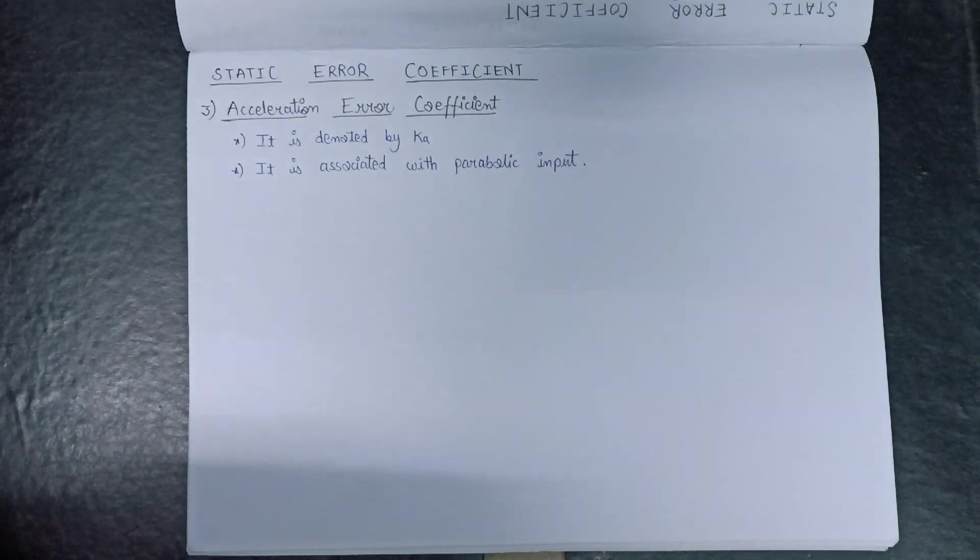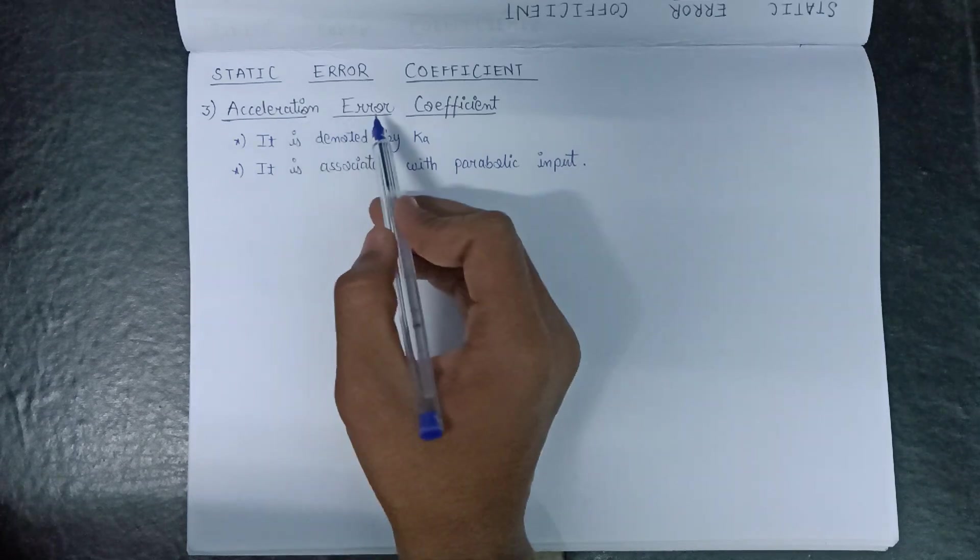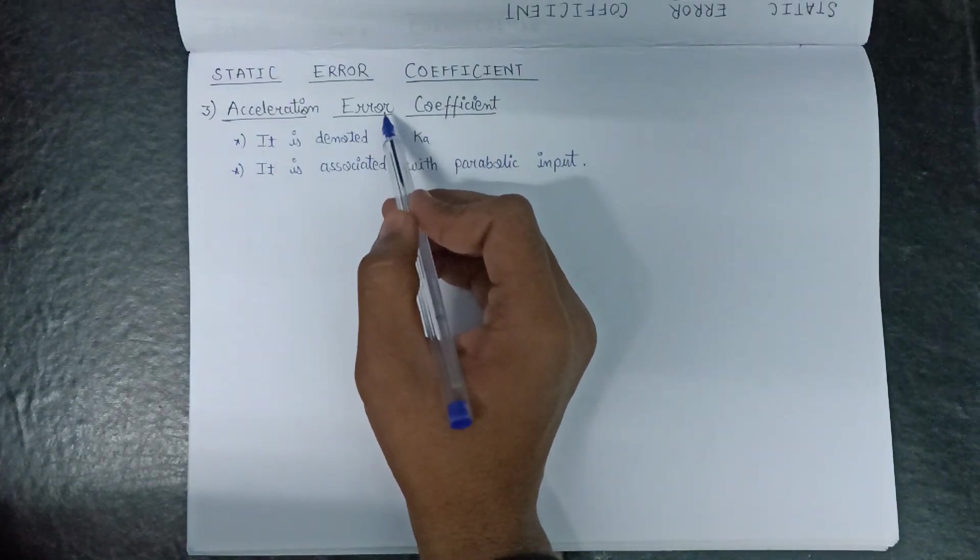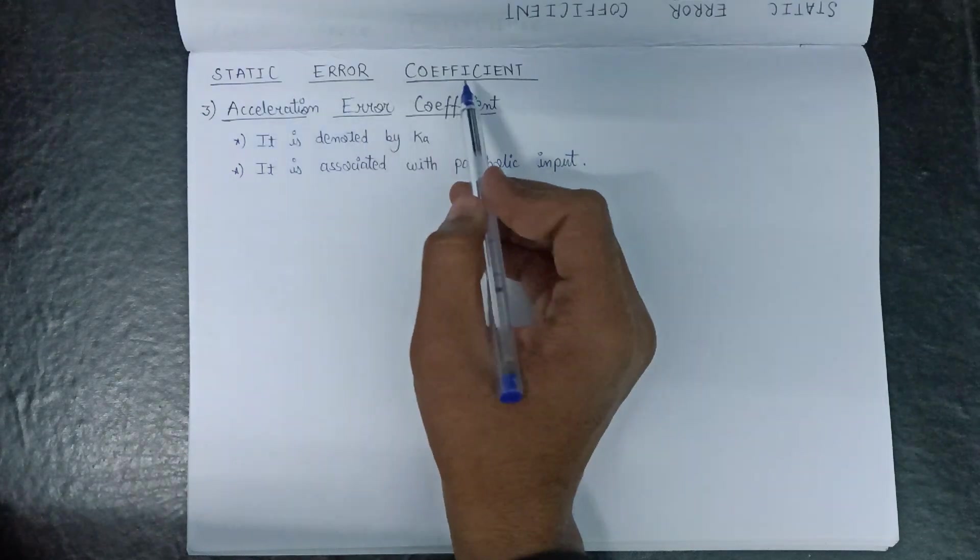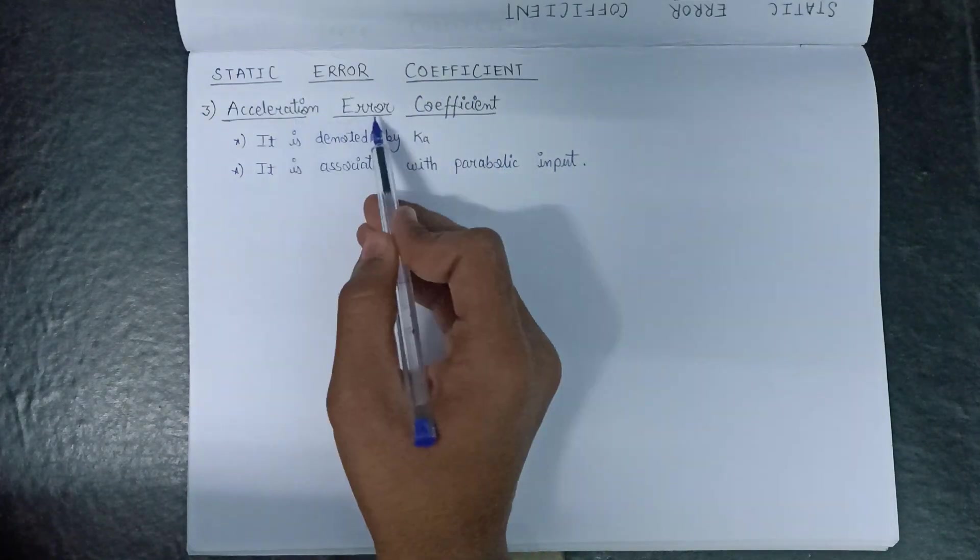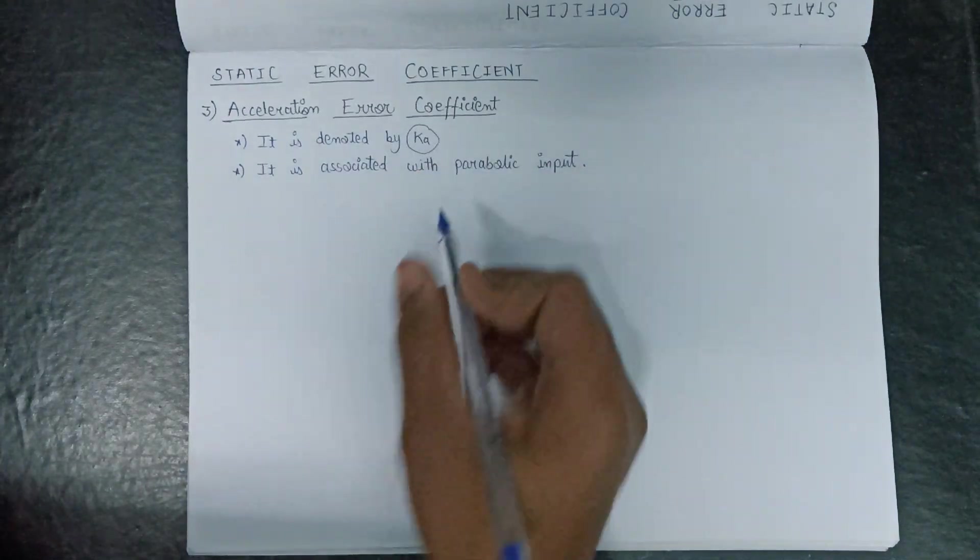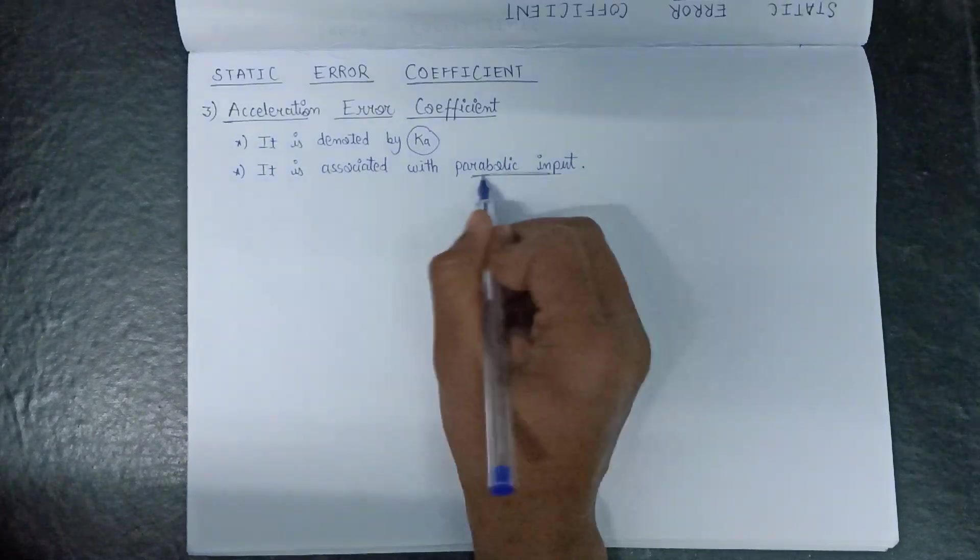Welcome all. In this lecture we are going to learn about acceleration error coefficient, so it is a third type of error coefficient which comes under static error coefficients. Acceleration error coefficient is denoted by the symbol Ka. It is associated with parabolic input always.